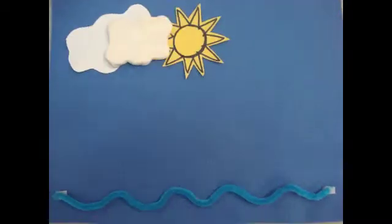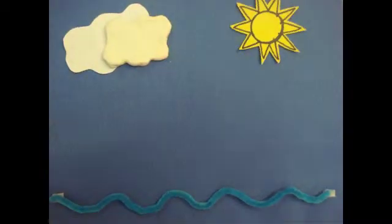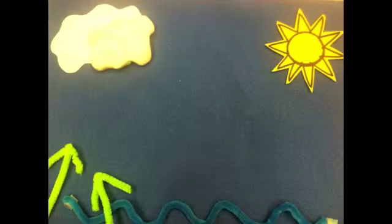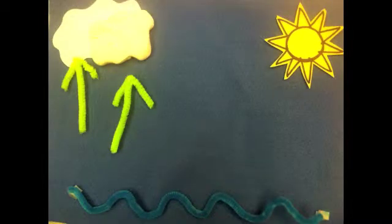The first step of the water cycle begins with the sun heating up water droplets in lakes, oceans, and rivers. Once the water is heated by the sun, it turns into steam and goes into the air and moves up towards the clouds.